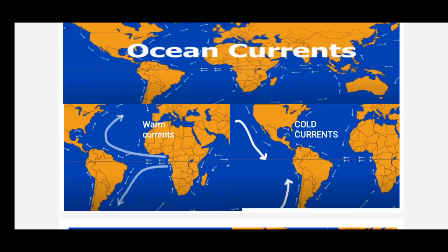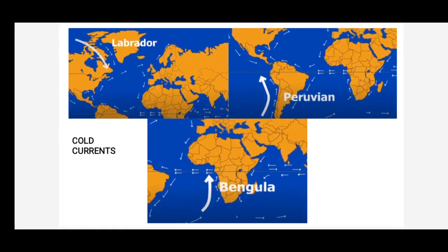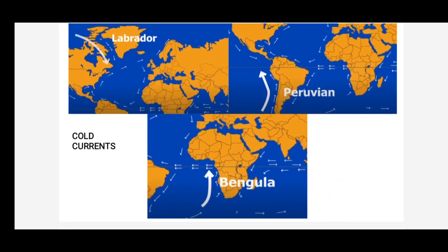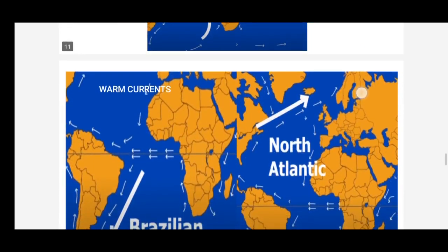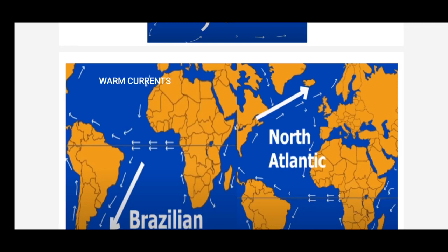The warm ocean currents move from equator to poles, and the cold currents move from poles to equator. Any coastal area with warm or cold currents flowing past it will be warmed or cooled if the winds are onshore. In a warm area, if a cold current passes, it makes the area cool; and in a cool area, when a warm current flows through it, that area experiences warmth. Examples of cold currents are Labrador current, Peruvian current, and Benguela current, whereas Brazilian current and North Atlantic Drift are examples of warm currents.